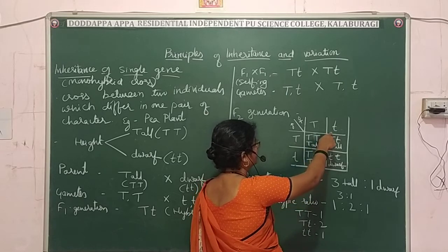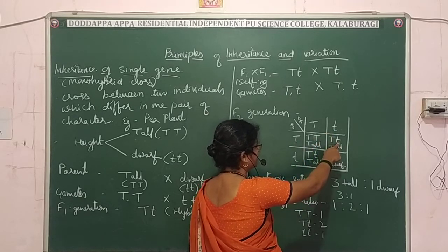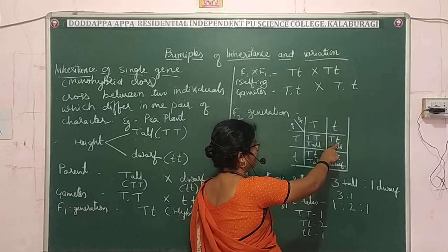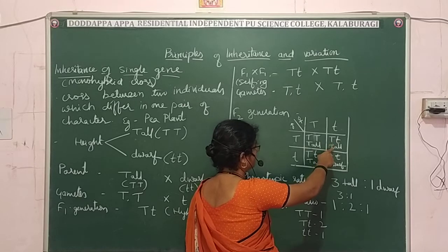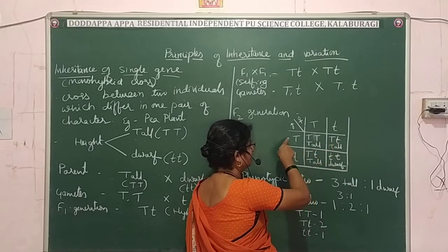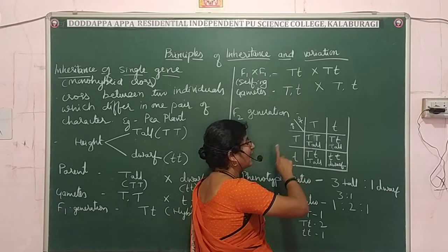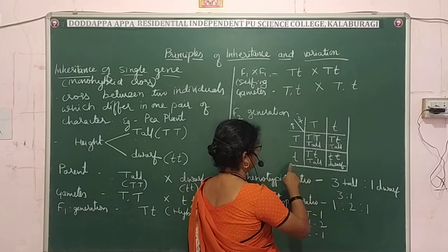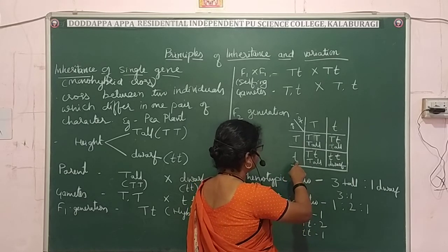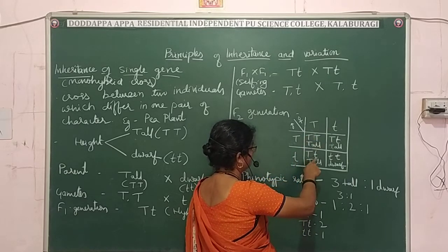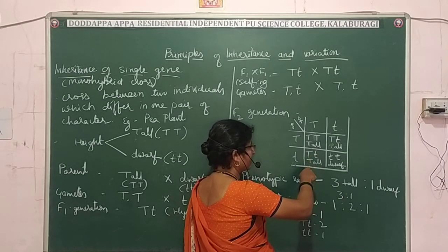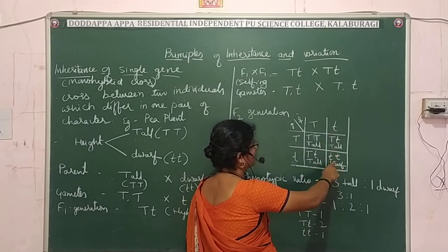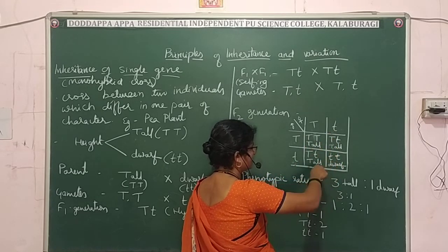Capital T with small t gives Tt — heterozygous. In the presence of the dominant tall gene, only the tall character is expressed: this is heterozygous tall. Small t with capital T also gives Tt — heterozygous tall. And small t with small t gives tt — homozygous dwarf.